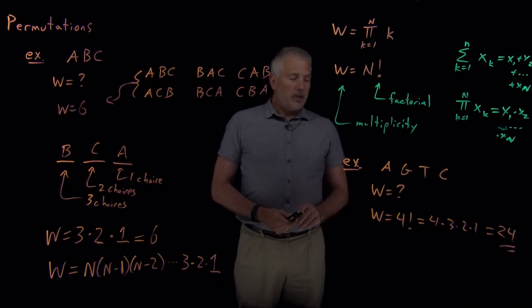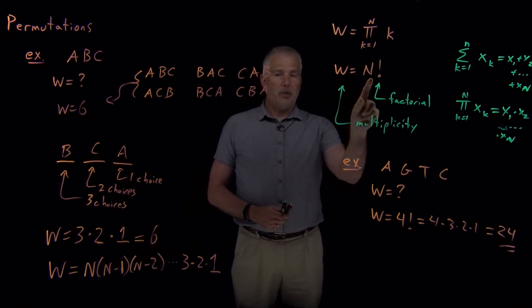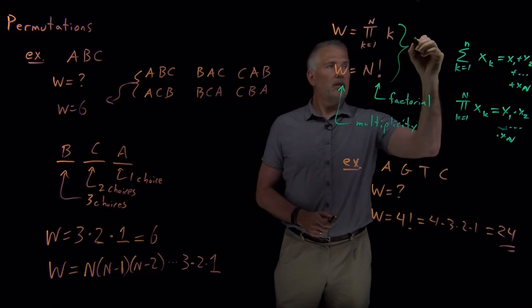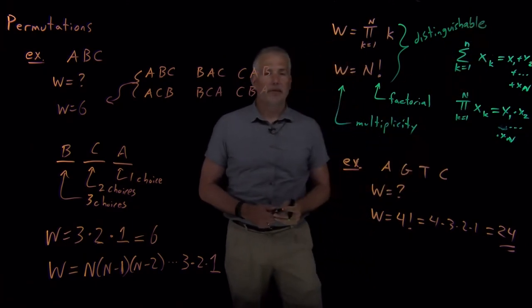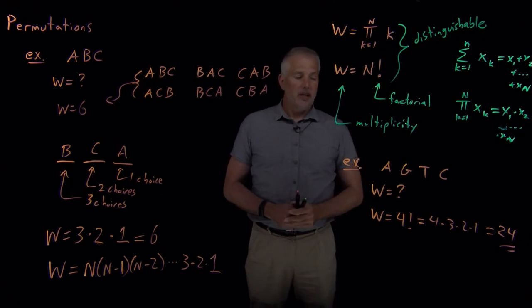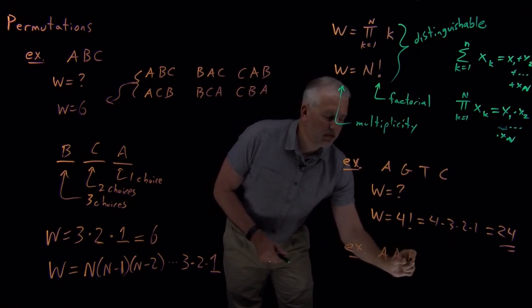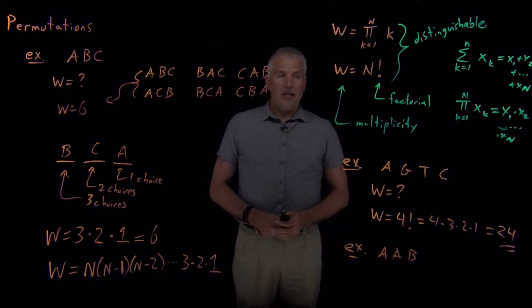We do have one important issue left to discuss. Everything I've written down so far, this evaluation that the multiplicity, the number of ways of permuting objects is N factorial, that is all true only if the letters or the base pairs or whatever objects it is that I'm arranging, if they're different from one another, or as a terminology word, if they're distinguishable from one another. For example, we won't solve this example, but if I pose the question, suppose the letters weren't all different. Suppose my three-letter word wasn't ABC, but suppose it was AAB. If I ask how many different ways are there of arranging those letters AAB where two of the letters are the same, the answer is not three factorial anymore.